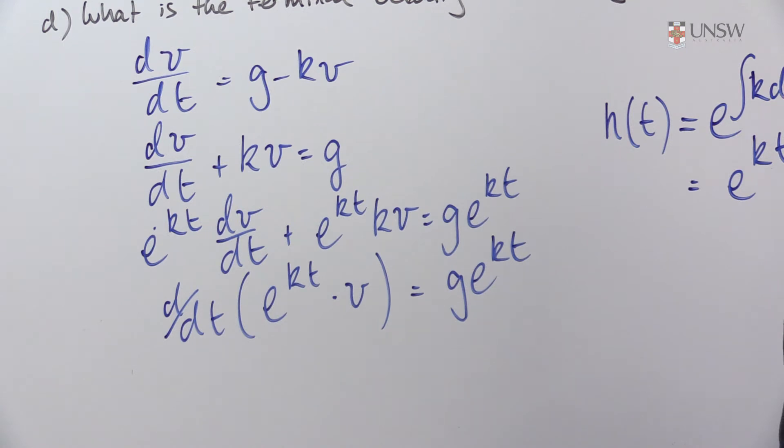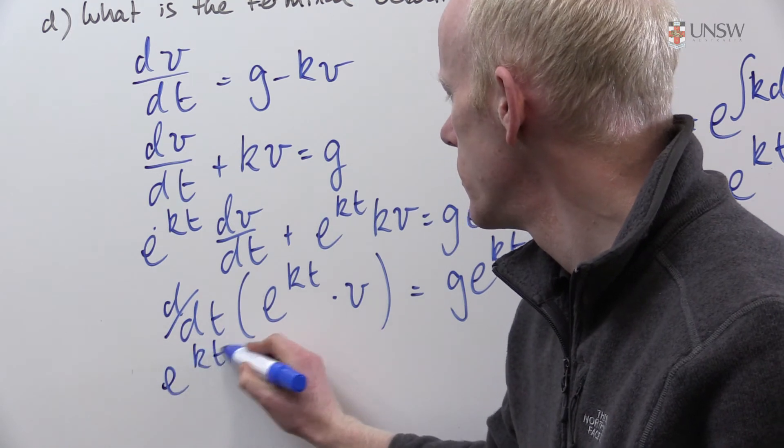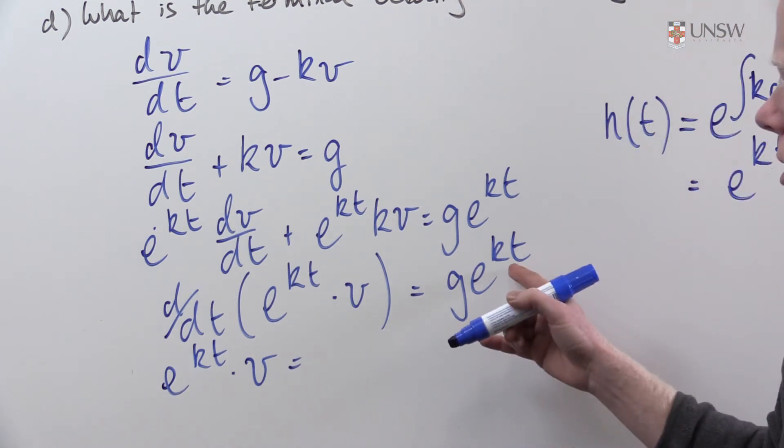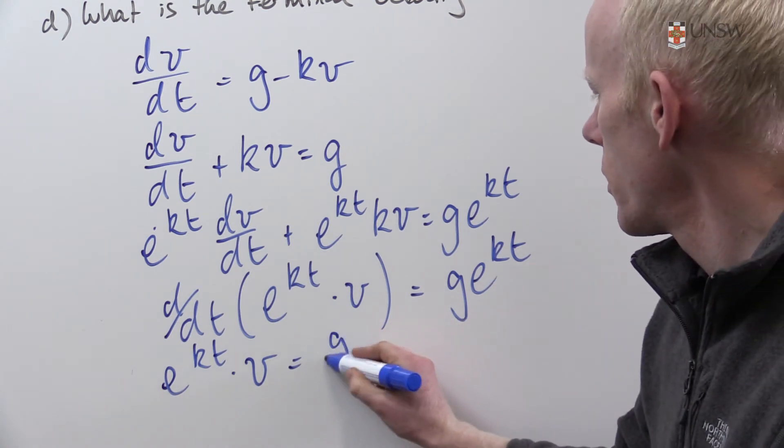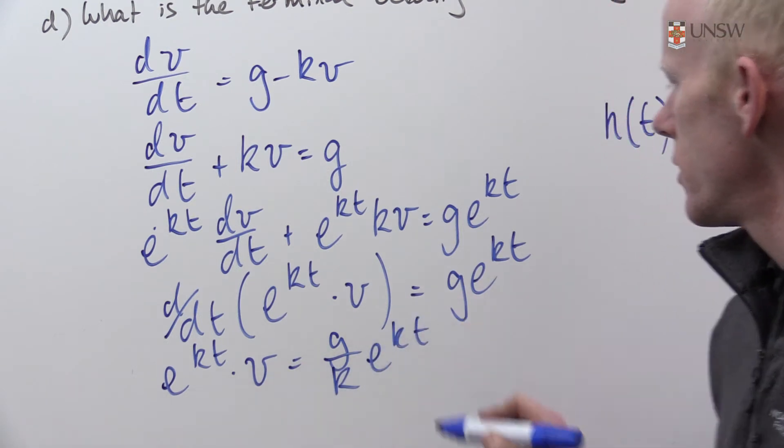At this point, we'll integrate both sides with respect to t. So integrating this exponential function gives me g/k times e to the kt.